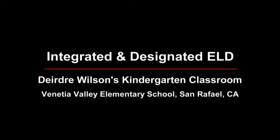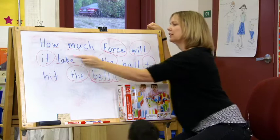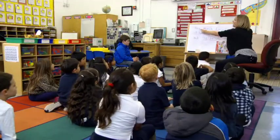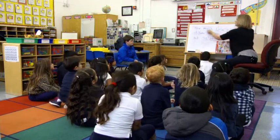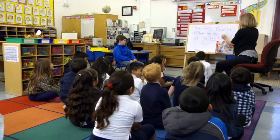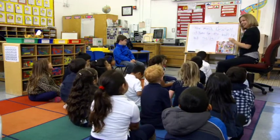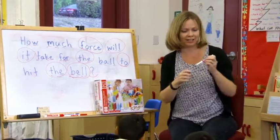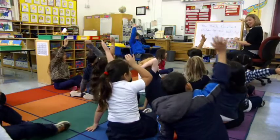Everyone read the word: Force. How much force will it take for the ball to hit the bell? This is a kindergarten class just three months into the school year and it's their first science unit — a thematic unit that the teachers have designed around the Next Generation Science Standards of force and motion. The whole class starts with a morning message that sets the tone for what we're going to be learning about today. That's also where kids get reminded of language they know. It's foreshadowing what's coming but also getting them excited about what is going to be happening in the day.